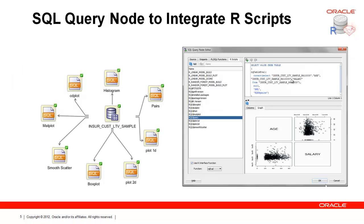Back to the SQL Developer vantage point. In this simple case, we have a number of different R graphics that we're integrating — just open-source R graphics for doing various plot types. I'll show this live in a demo in a second, but here are a couple of canned screenshots. We have a dataset and we want to call out certain plots or scatter plots that we like the way R does them. So I register my R scripts — there's a white paper on the Oracle Data Mining website that shows how to do this — and I can include those as R snippets that I can run as part of a flexible SQL Query Node.